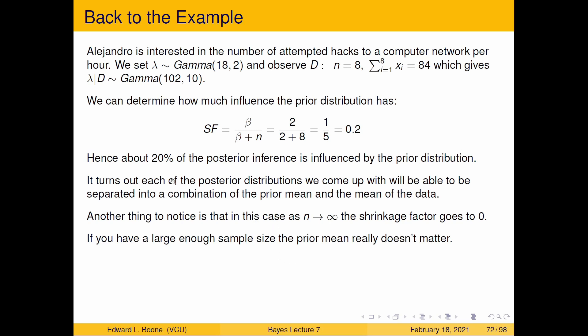And it turns out that posterior distributions, even the ones we came up with before for the Bernoulli trials, you can break it apart like this and find the shrinkage factor. You really want to know how much influence did the prior distribution have on the posterior mean versus the mean of the data. So it's showing you where the compromise is in between the two. It's pretty easy to calculate. It's just a ratio of the prior information over the total information in this case.